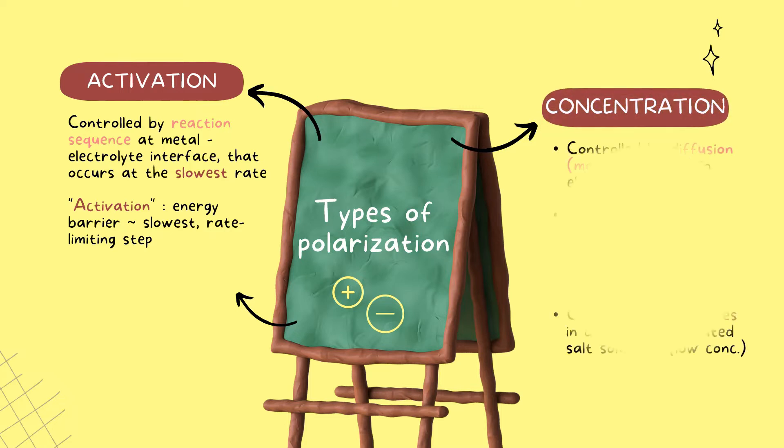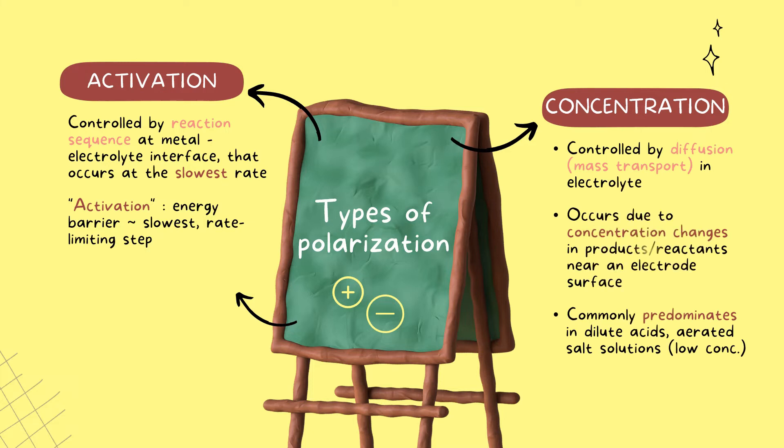Next, concentration polarization is controlled by diffusion in electrolyte. Besides, this type of polarization generally predominates in the dilute acid and aerated salts solutions.